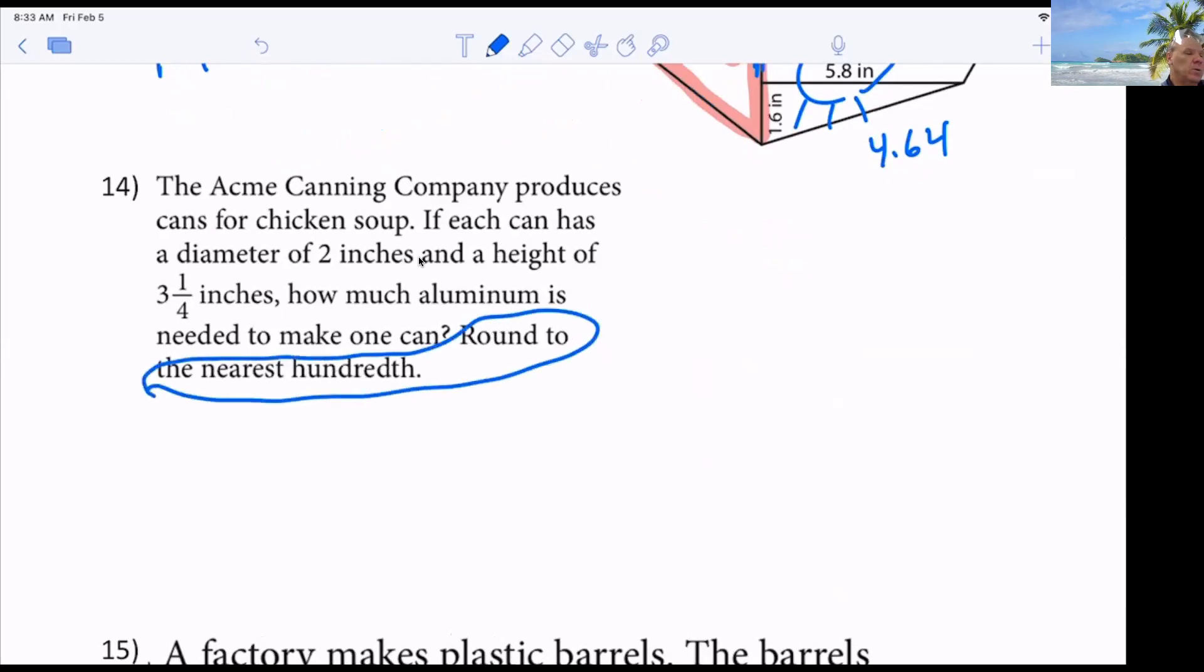The canning company produces cans for chicken soup. If each can has a diameter of 2 and a height of 3 and a quarter inches, how much aluminum is needed to make one can? I don't care about rounding, of course. Let's try to stick with pi.